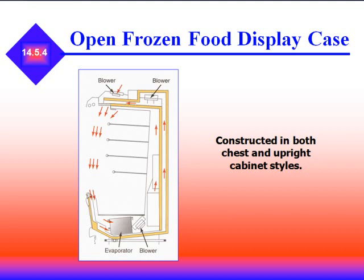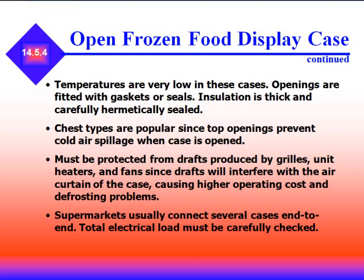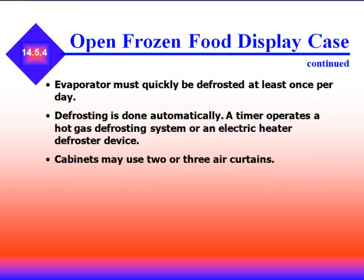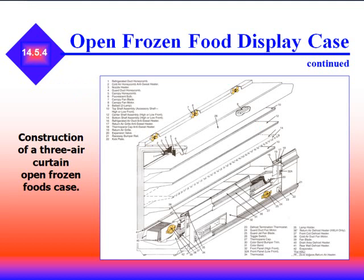Open frozen food display cases are constructed in both chest and upright cabinet styles. Temperatures are very low, openings are filled with gaskets and seals, and insulation is thick and hermetically sealed. Chest types are popular since top openings prevent cold air spillage when the case is opened. Cases must be protected from drafts produced by grills, unit heaters, and fans, as drafts interfere with the air curtain, cause higher operating costs, and create defrost problems. Supermarkets usually connect several cases end to end. The evaporator must be defrosted at least once per day — done automatically using a timer that operates a hot gas defrost mechanism with an electric heater or defrost device.